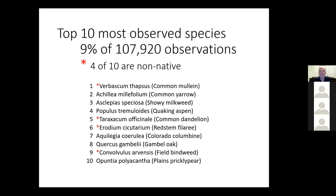Here's the list: out of almost 108,000 observations in Colorado, the top 10 species accounted for 9% of all observations. Four out of the 10 aren't even native. Common mullein was the most observed species in Colorado on iNaturalist, followed by yarrow, milkweed, dandelions — easy to access since they're in everybody's yards — columbines, and prickly pear cactus. It's a very skewed distribution toward a very few species, and weeds are pretty dominant.